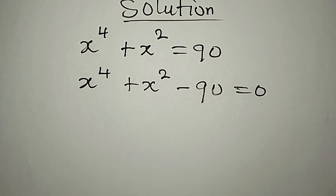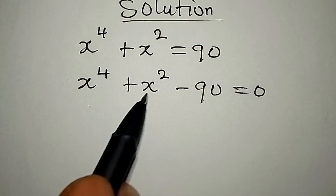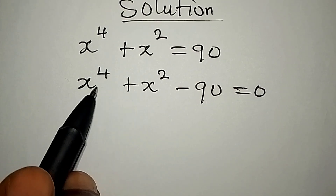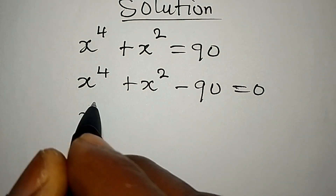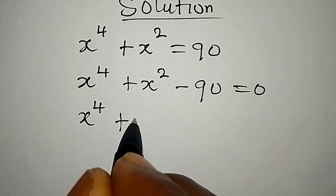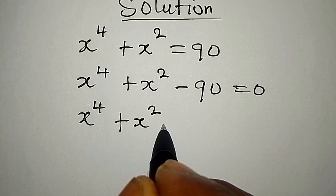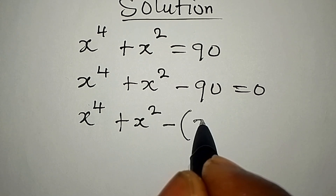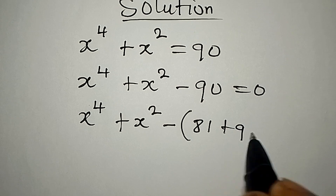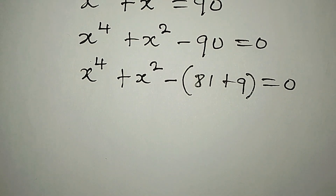The next thing I'm going to do is make sure that 90 is expressed in a specific form. We have x to the power of 4 plus x to the power of 2, and this 90 I can write as 81 plus 9, and this is equal to zero.